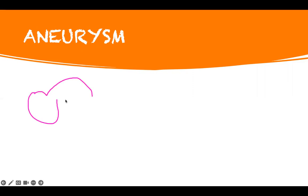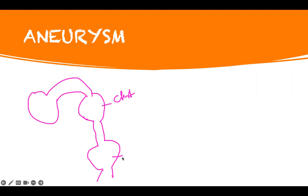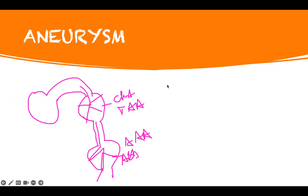My favorite topic - aneurysm. The vessels coming from the heart can get bulges - sac-like projections. In the chest this is a thoracic aortic aneurysm; in the abdomen this is an abdominal aortic aneurysm. When blood enters the aneurysm there is turbulent flow and you can hear a bruit - a buzzing sound. There is too much pressure on the wall, so the problem with aneurysm is rupture. Thoracic aortic aneurysm: located in the chest, may cause dysphagia or shortness of breath from compression.